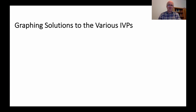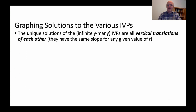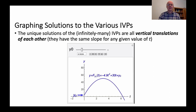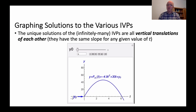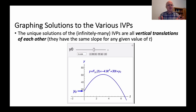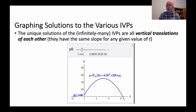The unique solutions of the infinitely many initial value problems are all vertical translations of each other — they must be, since they're all antiderivatives of the same function and have the same slope at any given value of t. As the initial height y₀ changes, the graph just moves up and down. Also realize that the motion is up and down — this is a graph of y versus time, not y versus x.